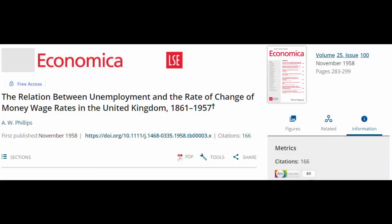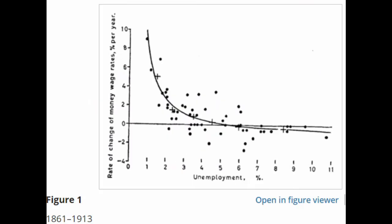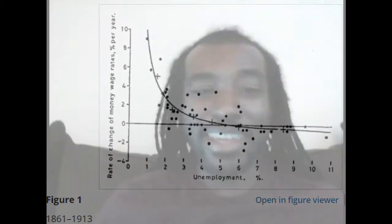In 1958, a New Zealand economist named A.W. Phillips, researching relationships between wages and unemployment in the UK, made a finding that would shape the study of economics for decades to come. In his paper, 'The Relation Between Unemployment and the Rate of Change of Money Wage Rates in the United Kingdom,' Phillips observed an inverse relationship between the rate of change in wages and the unemployment rate — the lower the rate of unemployment, the higher the rate of change in wages. Economists quickly extended this idea to price levels, or inflation, in an economy.